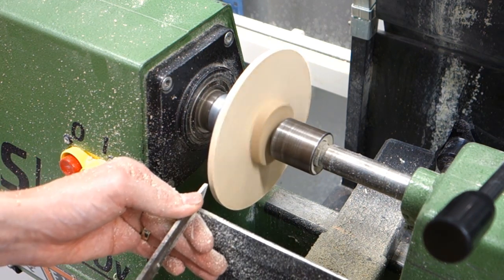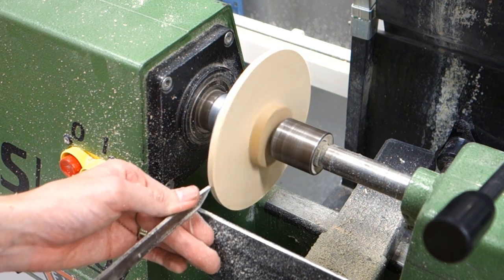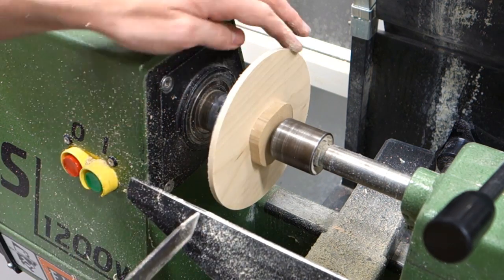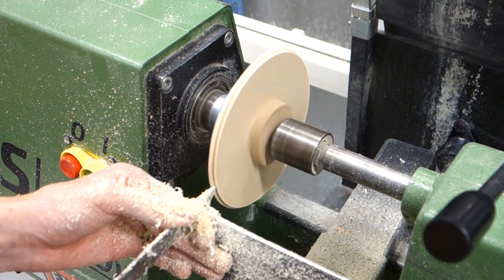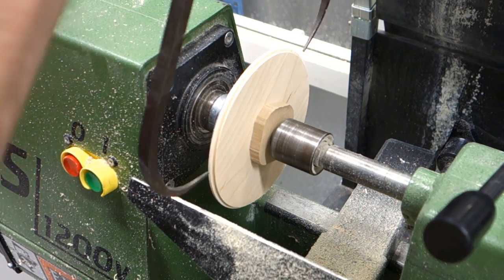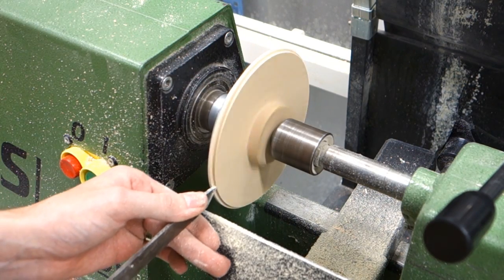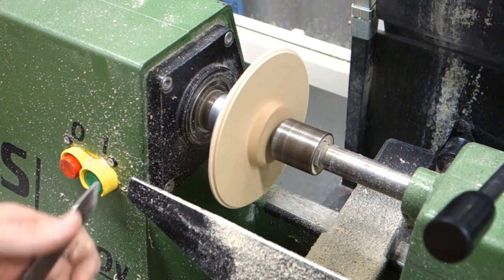Now, I don't claim to be a woodturner, so take what I'm doing here with a grain of salt. The point is though to turn down a shoulder with a specific diameter. Since we're going to do this twice, once for the bottom and once for the top, using a caliper to make sure you don't overshoot your diameter becomes very helpful.